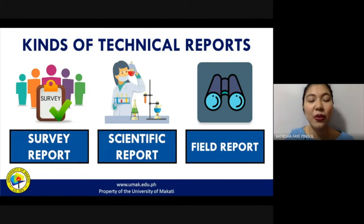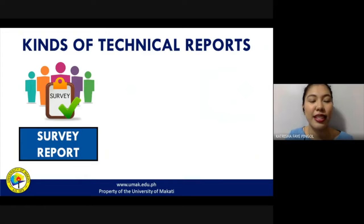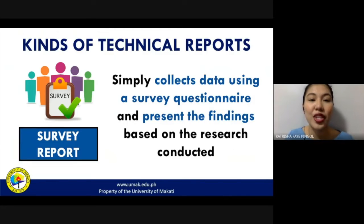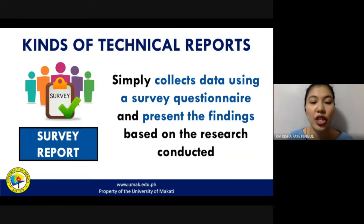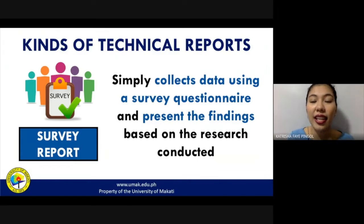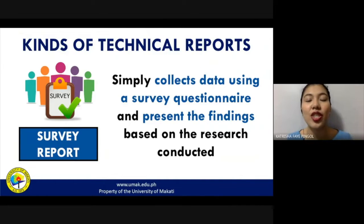Let us now differentiate what makes these three kinds of technical reports different from one another. A survey report is a type of academic paper wherein you collect data using a survey questionnaire and then present the findings from that questionnaire based on the research you have conducted. You ask your study participants to fill out or answer the survey questionnaire, and from their answers, you summarize and present your findings.